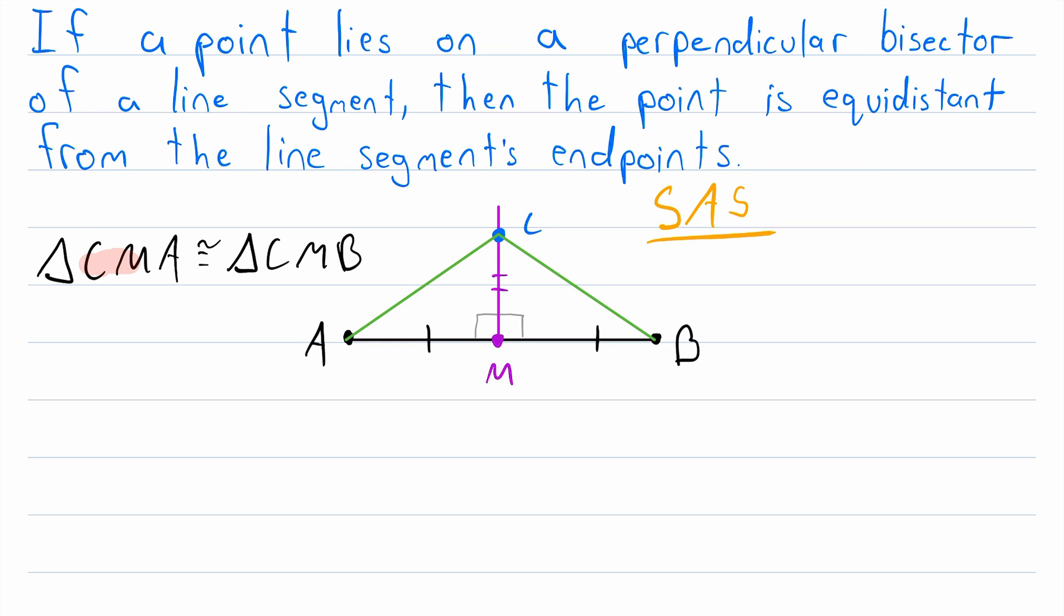Since side CM is congruent to side CM and side MA is congruent to side MB, we know that this is an accurate labeling of these congruent triangles. And therefore, the side CA corresponds to the side CB.